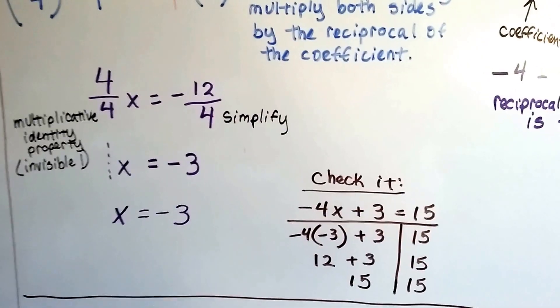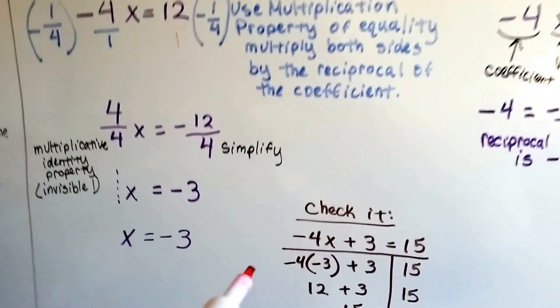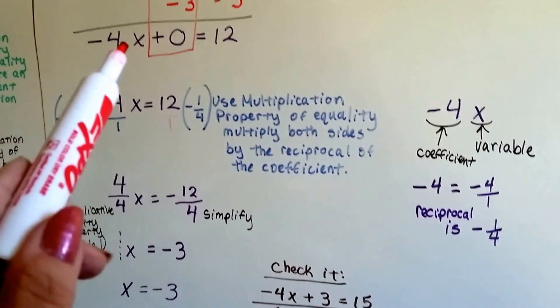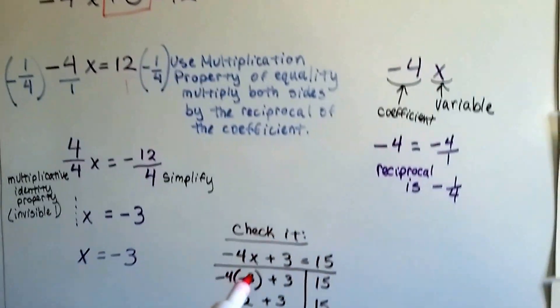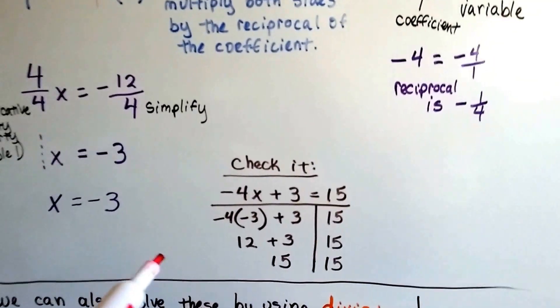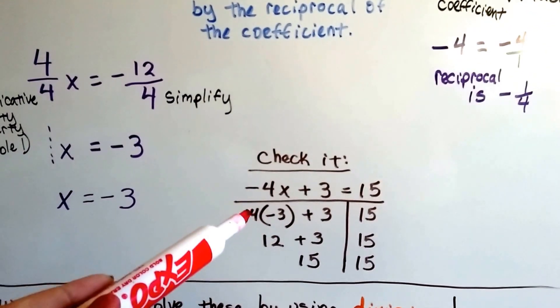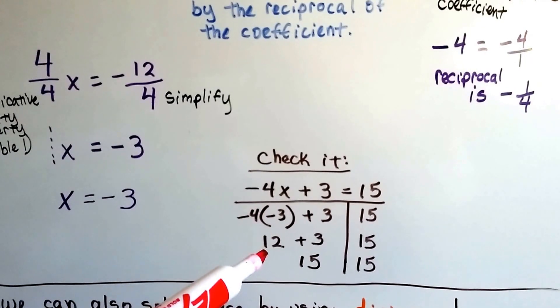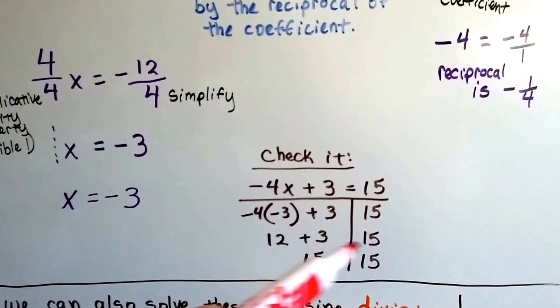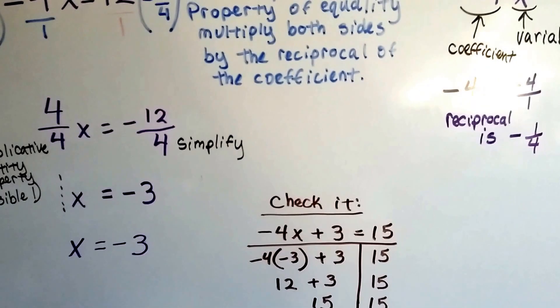But we need to make sure that we did it correctly so we check it. So we write our equation. Negative 4x plus 3 equals 15. And we plug in negative 3 where the x was. Negative 4 times negative 3 is a positive 12. Plus the 3 is 15. 15 is 15.